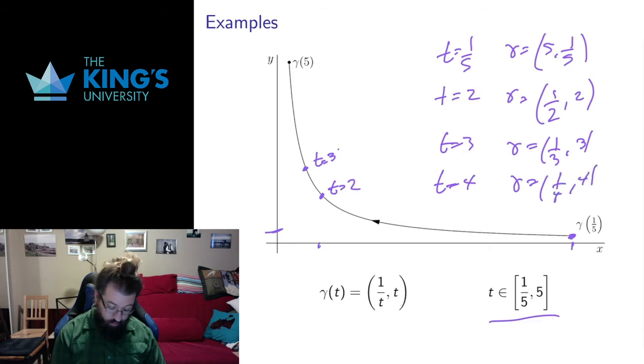What happens if t equals 4? 1/4, 4? That's going to be up here. And then t equals 5, I end up at 1/5, 5 here.